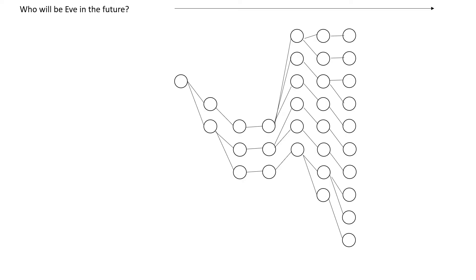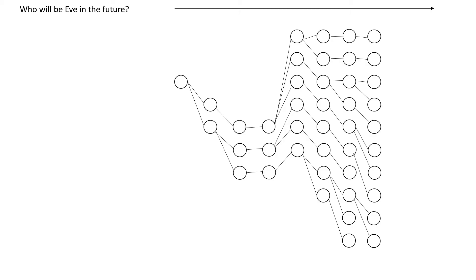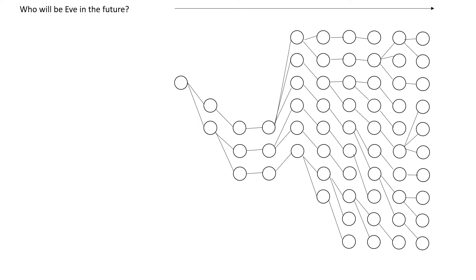Okay. So from this, let's think about this continuing into the future. Who will Eve be if we go forward? So I'm just kind of adding randomly some more lines, some more lineages. You can see where we're populating and splitting lineages. And now what is this happened?